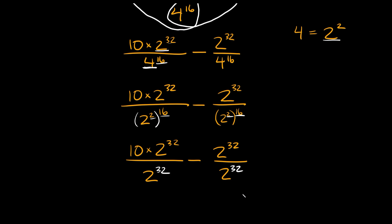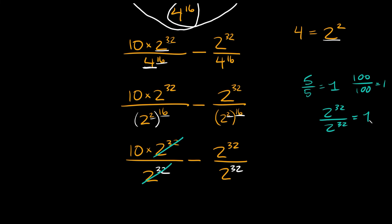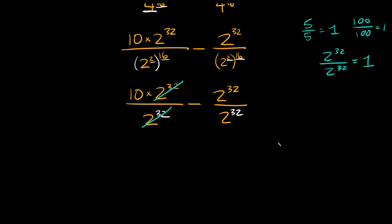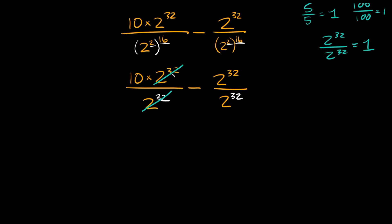Now we're getting somewhere — we can cancel some stuff out. We have the same term on top as on the bottom in each fraction, so those cancel out. Any number divided by itself is equal to 1, so 2 raised to the 32nd divided by 2 raised to the 32nd equals 1. So on the left side we're just left with 10, and on the right side we get 1. So we finally get 10 minus 1, which equals 9.